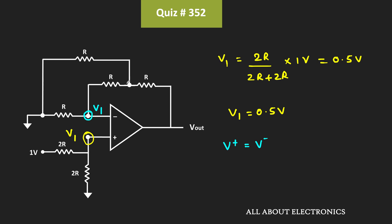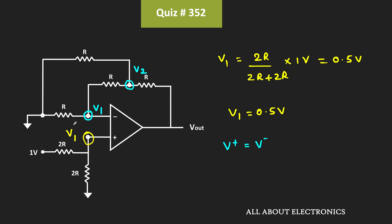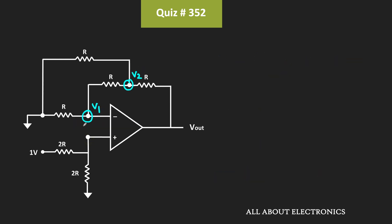That means the voltage at this node is also equal to V1. Let's say the voltage over here is equal to V2. Now let's apply the KCL at the inverting terminal. Applying KCL, we can write V1 divided by R — that is this current — plus V1 minus V2 divided by R — that is this current — is equal to 0.